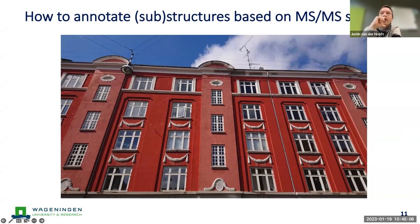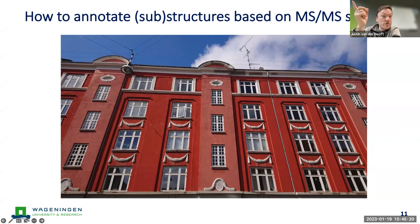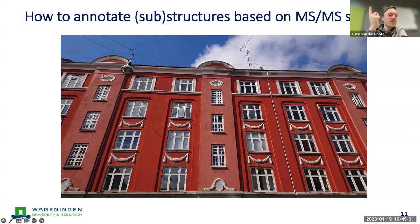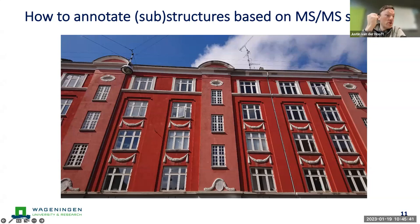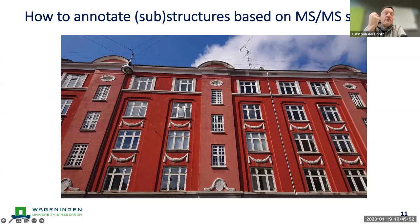Justin shows a picture of a building in Copenhagen, where he did an internship during his studies and lived for nearly seven months. The reason he shows it is to explain how annotation works. When you looked at the picture, you tried to see what it is — hopefully concluding it's a building — because you recognized windows and the typical structures you expect for a building. Effectively, that's what many computational metabolomics tools do today: they look at spectra and try to recognize common patterns that can be linked to what we already know. If a tool can recognize the particular scaffold of a flavonoid based on two or three peaks, it will try to do that and return an annotation.